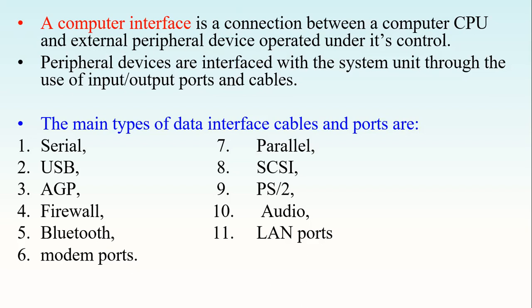The main types of data interface cables and ports normally found in computers are: serial, USB, AGP, FireWire, Bluetooth, modem ports, parallel, SCSI, PS/2, audio, and LAN ports. The reason these cables and ports are listed together is that a data interface cable of a certain type will always work with a port of the same type — for example, a serial cable requires a serial port.